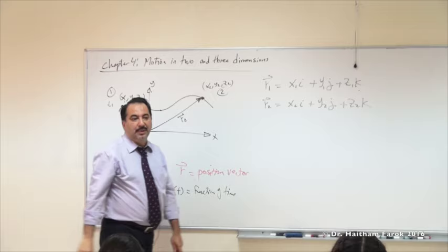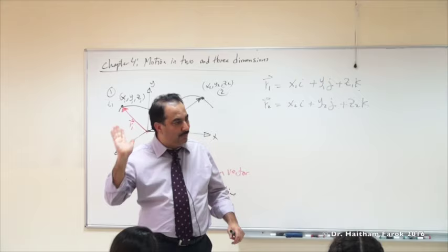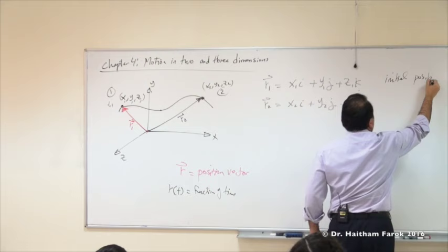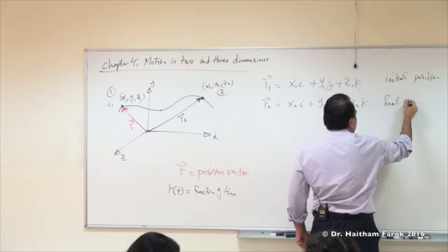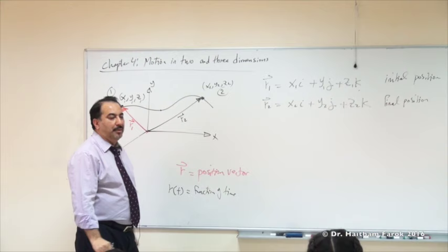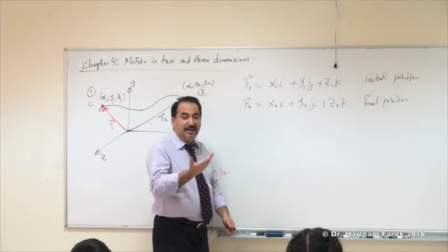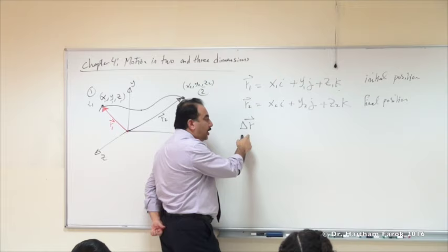So what we did so far: we defined position in space. Like before it was X1, X2, now it's R1 - initial position - and R2 - final position. Now if I know the positions, can I find the displacement - the change in position? So it means delta R. Delta R is a vector. Delta R equals R2 minus R1.